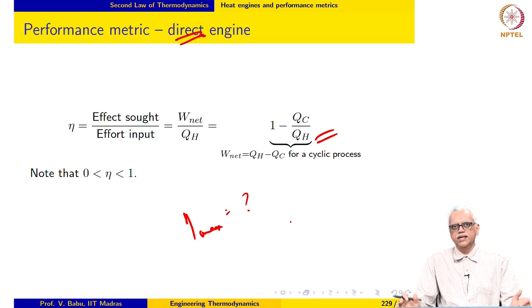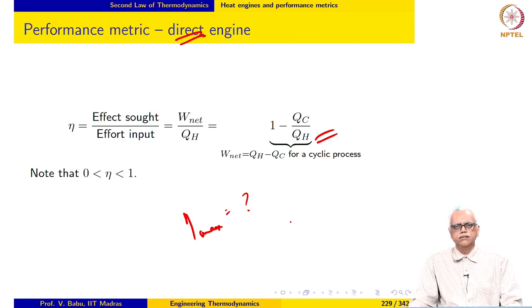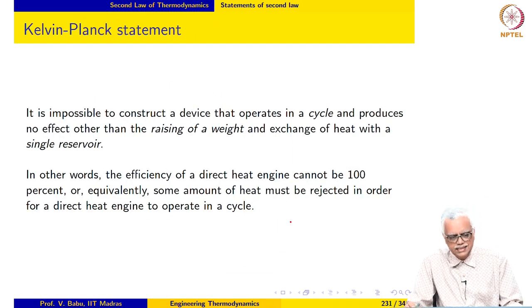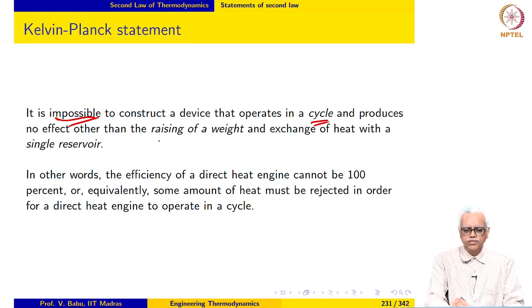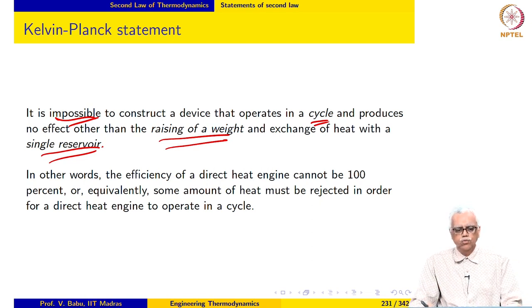Can efficiency be 100%? If we have an ideal device, is it possible that such a device will have 100% efficiency, meaning it converts all of the input heat into work? We start with the Kelvin-Planck statement, which reads: it is impossible to construct a device that operates in a cycle and produces no effect other than the raising of a weight and exchange of heat with a single reservoir. This statement asserts that it is not possible for a direct heat engine to have 100% efficiency.